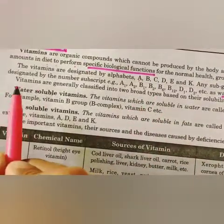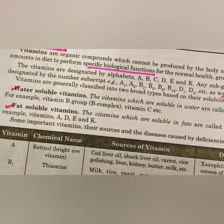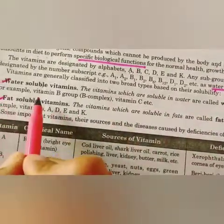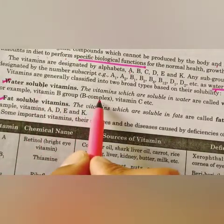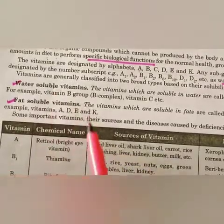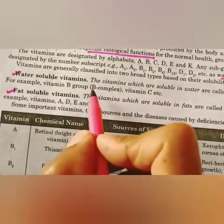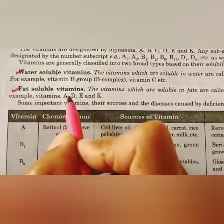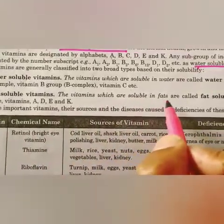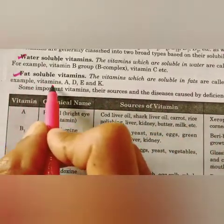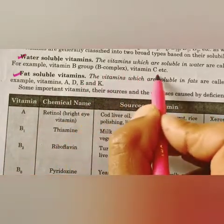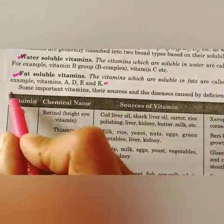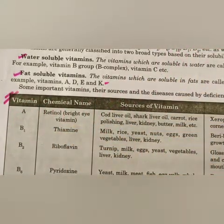Water-soluble vitamins are those soluble in water — the B complex group and vitamin C are water-soluble. Fat-soluble vitamins are vitamins A, D, E, and K — all vitamins except B and C are fat-soluble.